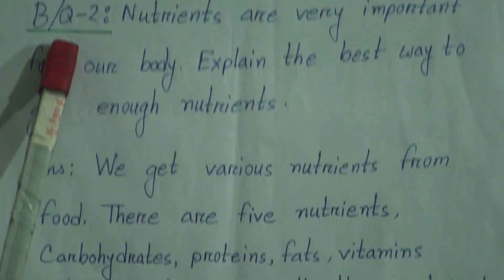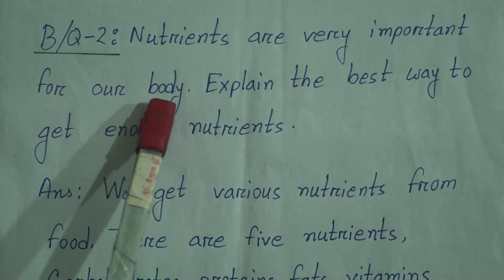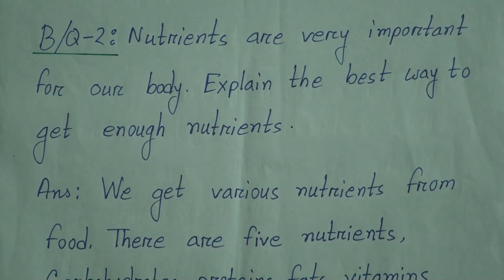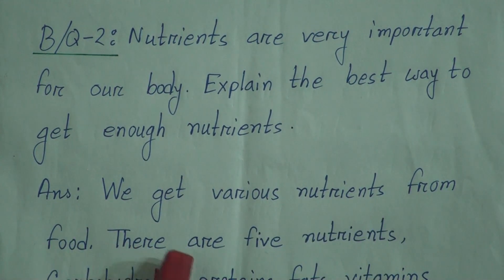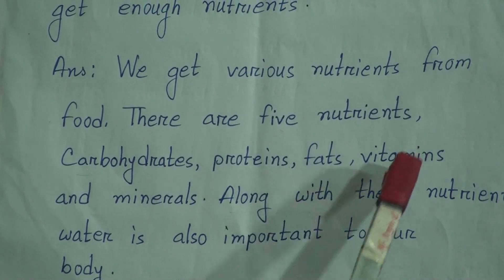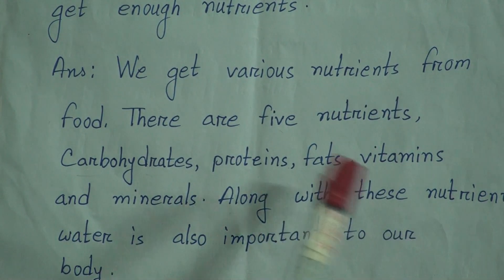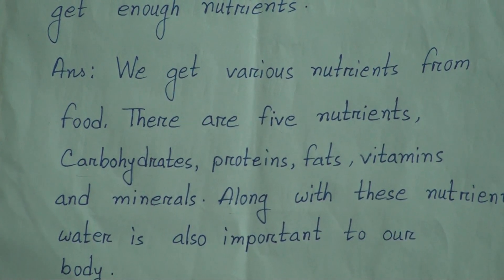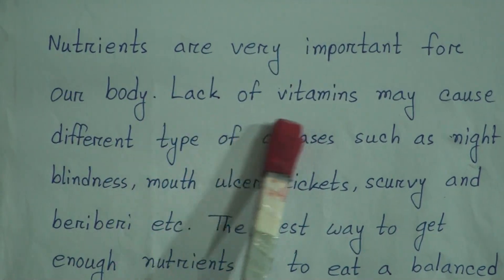Now, broad question number 2: Nutrients are very important for our body. Explain the best way to get enough nutrients. Answer: We get various nutrients from food. There are five nutrients — carbohydrate, protein, fats, vitamins, and minerals. Along with these nutrients, water is also important to our body.